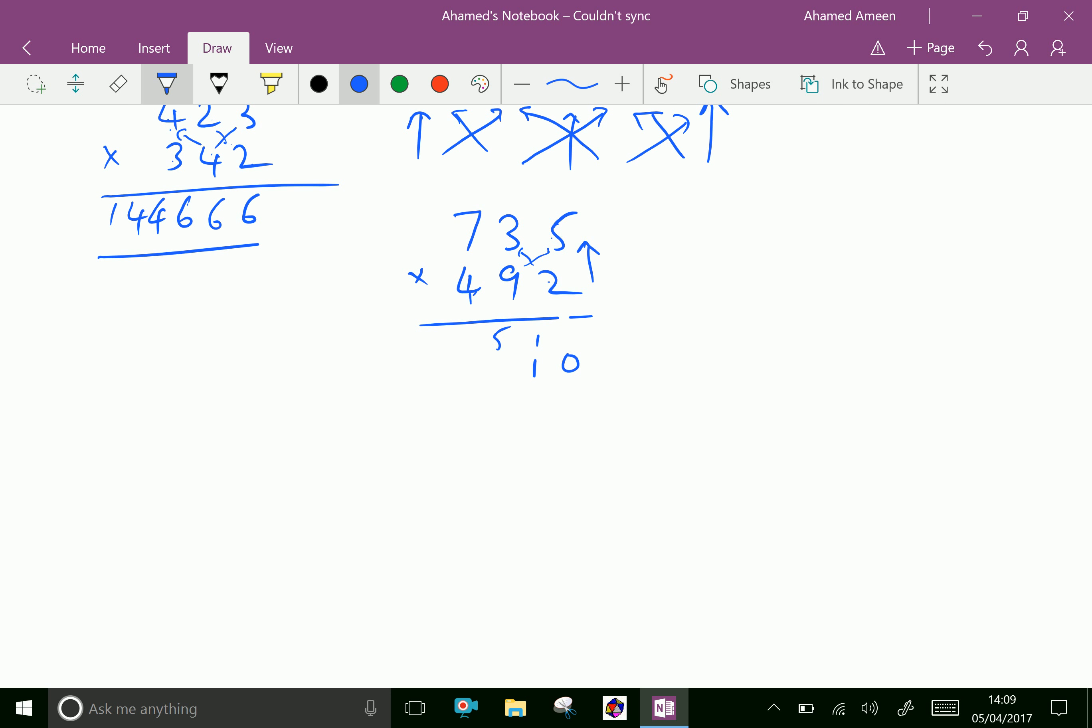Put 1 and 6 carries. 7 times 9 is 63, 4 times 3 is 12. 12 plus 63 is 75, put 5 and 7 carries. 4 times 7 is 28.